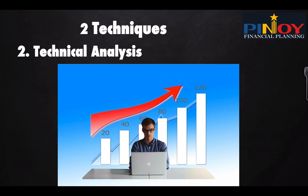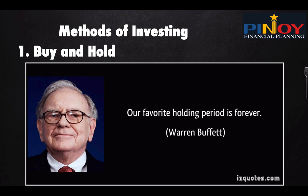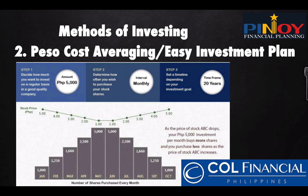If you're a chartist, you don't care about earnings — as long as the chart shows it going up, that's when you buy. We actually have several methods of investing. First is buy and hold, which is Warren Buffett's favorite. His favorite holding period is forever — you just buy shares of stock and hold them. You don't go back for 20 years, then check on them. That's the buy and hold strategy.